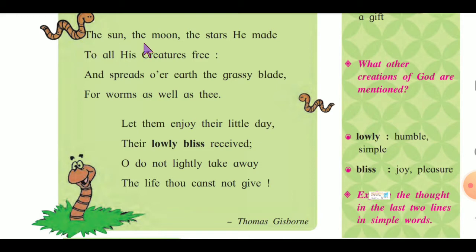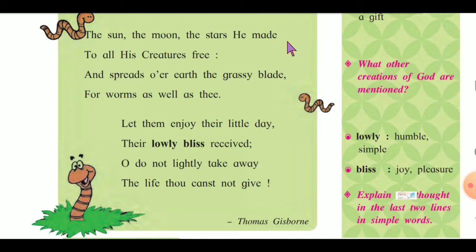The sun, the moon, the stars he made, to all his creatures free. 'He' refers again to God. God ne sun banaya hai, moon banaya, stars banaya hai — to all his creatures free. Yeh sab jo usne banaya hai, sab ke liye banaya hai, sab creatures ke liye banaya hai, sirf humans ke liye hi nahi banaya.